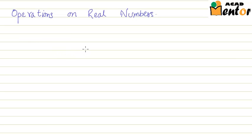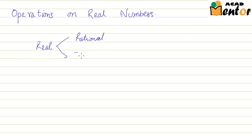Hi everyone. In this video we will talk about operations on real numbers. Real numbers are a combination set of rational numbers and irrational numbers. Everyone is pretty much confident about rational numbers and operations on rational numbers, and even irrational numbers behave pretty much the same.